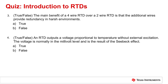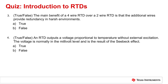Question 3: True or false — the main benefit of a four-wire RTD over a two-wire RTD is that the additional wires provide redundancy in harsh environments. The correct answer is B, false. The main benefit of a four-wire RTD is higher accuracy that results from automatic lead resistance cancellation. Question 4: True or false — an RTD outputs a voltage proportional to temperature without external excitation, with the voltage normally in the millivolt level as a result of the Seebeck effect. The correct answer is B, false. An RTD requires external excitation, and the Seebeck effect describes the behavior of a thermocouple.